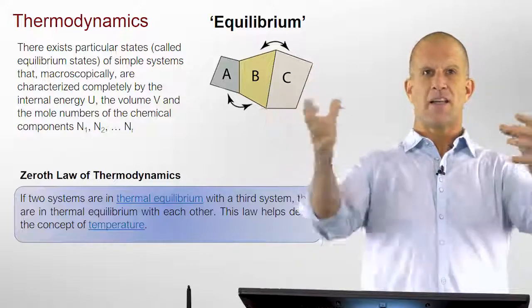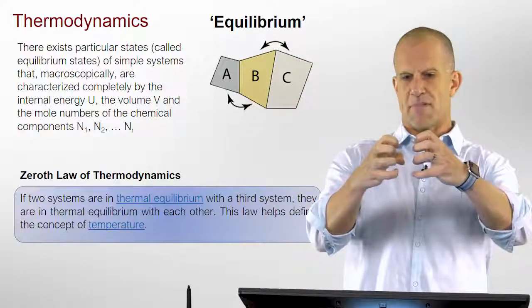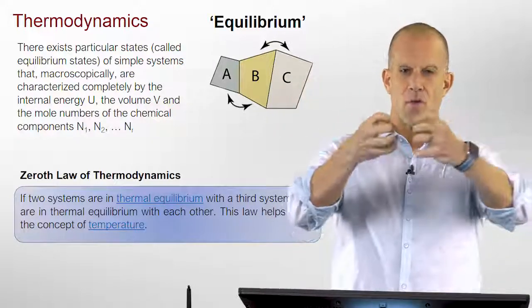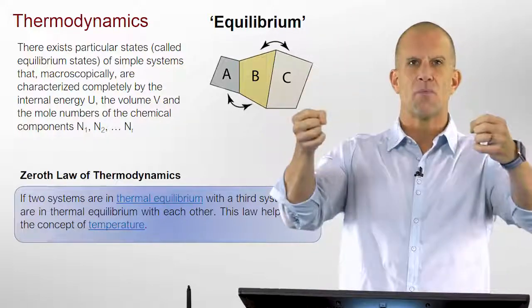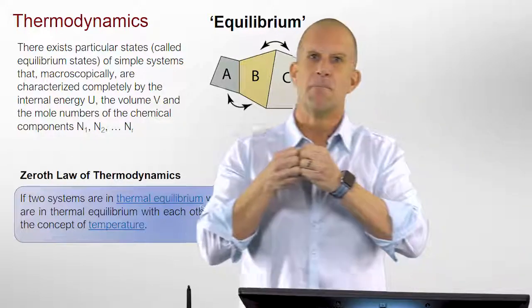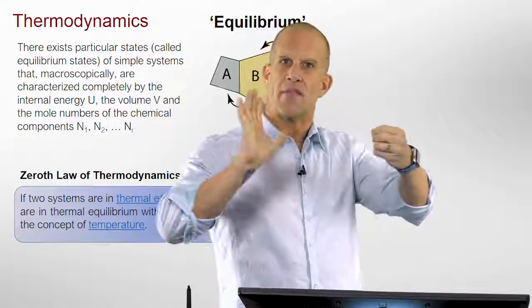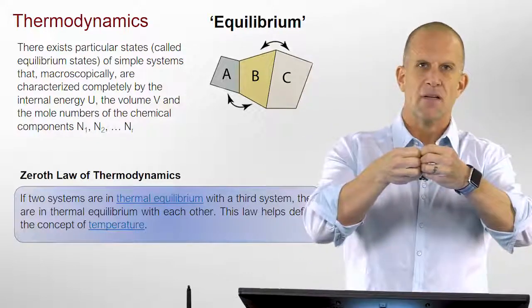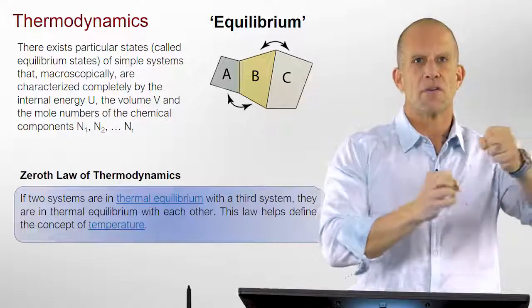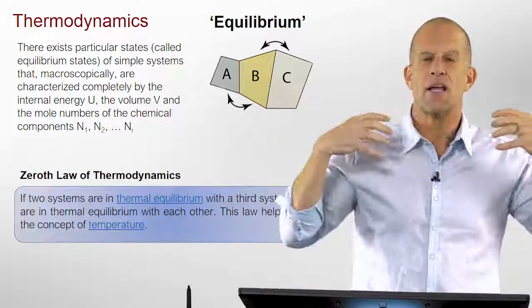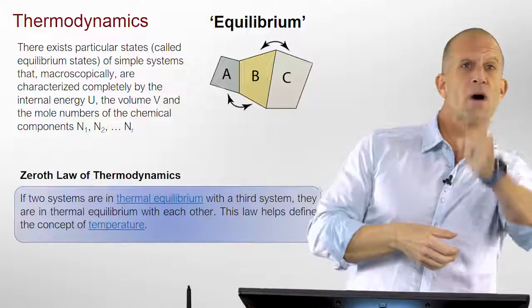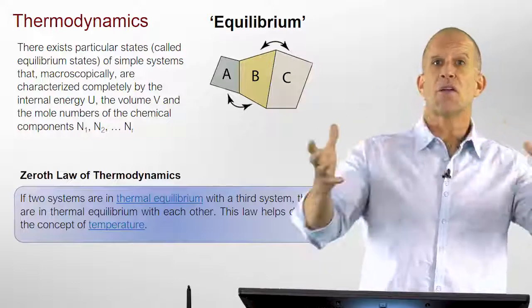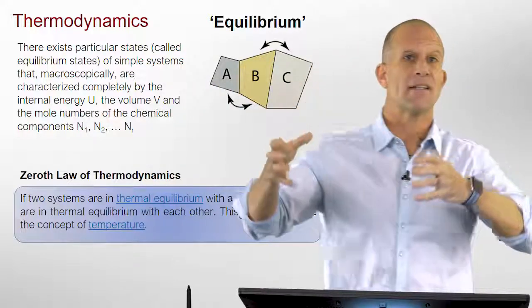One that's based on the idea if you take two things with diathermal walls where the walls between two things, say one's a hot object, one's a cold one, you put them in contact with each other, and the walls allow thermal conductivity across it, what do you expect to happen? You expect the hot one to get a little cooler, the cool one to get a little hotter, and eventually that entire system, so one being A, one being B, to reach the same temperature. And then if you look at it over time, they will always remain at that same temperature.